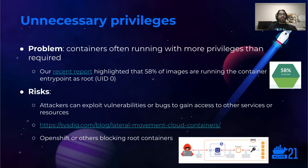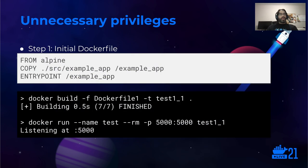According to the Sysdig 2021 Container Security and Usage Report, 58% of containers are running as root, UID 0. So it's very common that containers are executed with more privileges than required. The risks of running as root or with higher privileges are that an attacker can exploit vulnerabilities or bugs and use those excessive privileges to gain access to other services or resources. In our blog post Cloud Lateral Movement, we analyze how a public-facing web application running in AWS can be exploited to access AWS instance metadata and use those credentials to assume a different role and get full control over EC2 instances. Furthermore, OpenShift and other container runtimes might impose restrictions and don't allow running containers as root by default.